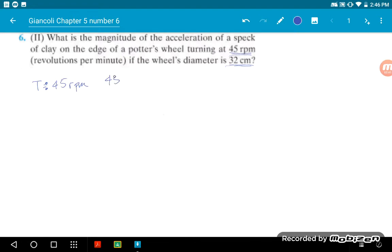So let's write that out: 45 revs over minutes, and then we could just convert out of minutes. So we know that one minute, notice that I put minute on top so that the units cancel, is equal to 60 seconds. So that becomes 0.75 revs per second.